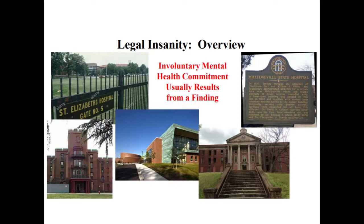Throughout our discussion of insanity, we're going to consider those circumstances in which we excuse a defendant's behavior. The defendant is legally guilty of a crime — meaning the government could prove all elements beyond a reasonable doubt — but we excuse the defendant's behavior because he was legally insane at the time of the offense. We choose not to punish him for a number of reasons: we consider him not morally blameworthy given his mental status; we determine he is not acting under his free, autonomous will but is driven by his mental condition; and it would be uncivilized — merely vengeful — to punish someone who suffers from a mental disease or defect.